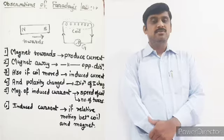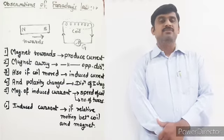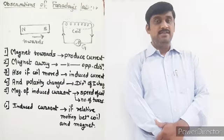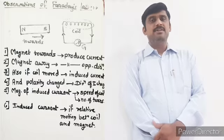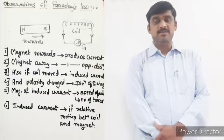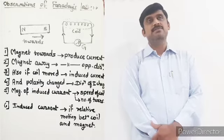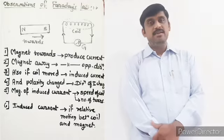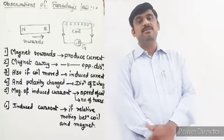Good morning students. We are going to learn our next unit, Unit Number 12: Electromagnetic Induction. In this unit we are going to see some concepts which we have already seen, and the different experiments performed by different scientists, so that we can explain some new concepts here. Electromagnetic means electric current and magnetic field, and induction means the correlation between electricity and magnetism.